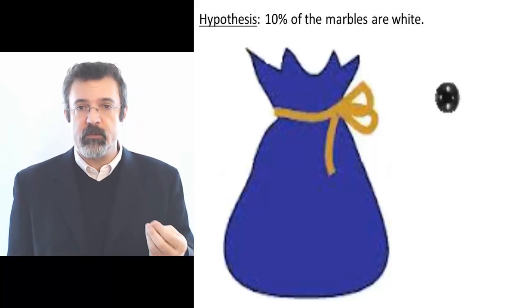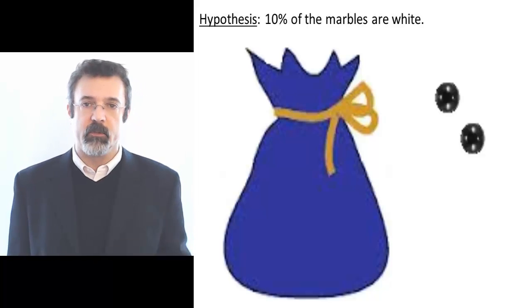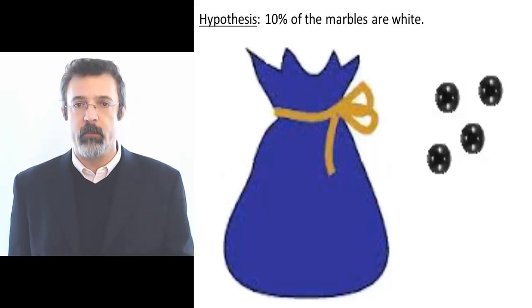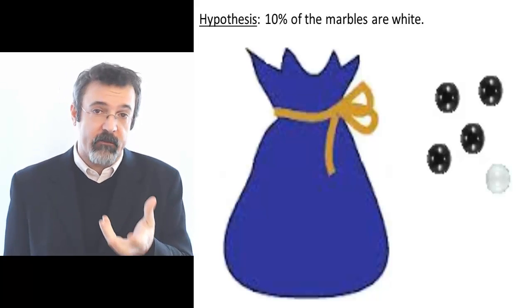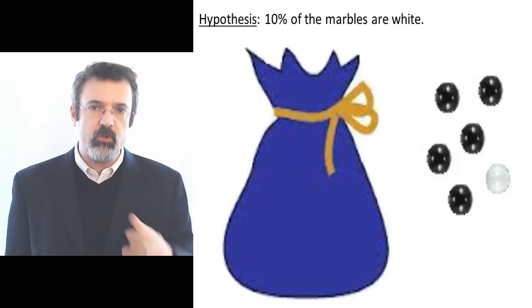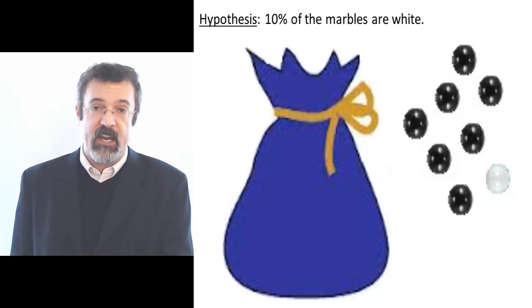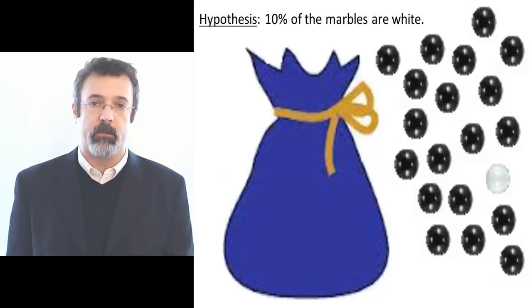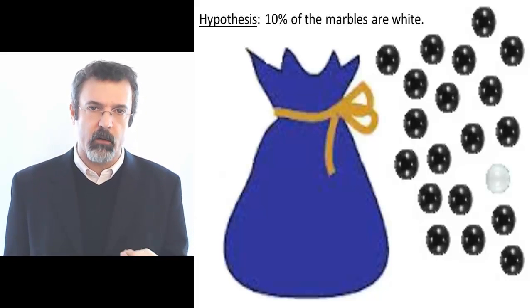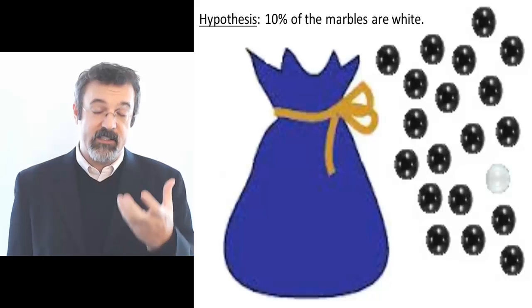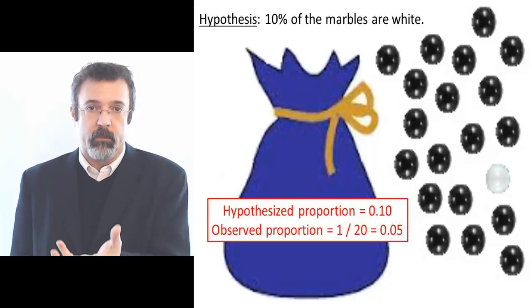So we draw the first marble — it's black. We draw another one — also black. We draw a third and a fourth marble — these are black. We draw a fifth marble and get, for the first time, a white marble. We continue to draw and replace marbles until we have a sample of 20 marbles. Suppose that amongst this sample of 20 marbles, only one of them is white — that is, in our sample we have 5% white marbles.